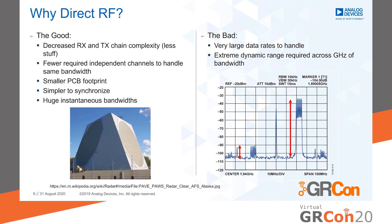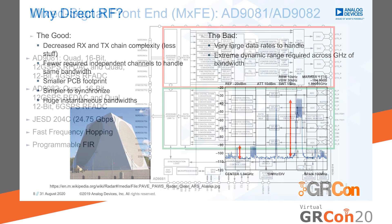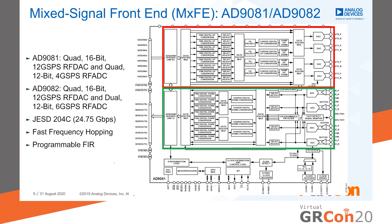To bring some context, let's look at an example device used in this space — something like the AD9081 or AD9082, which I use on a daily basis. These are highly integrated chips. On a single chip, we have quad DACs and quad ADCs with very high bandwidths — on the order of 4 or 6 gigasamples per second on the ADC side and 12 gigasamples per second on the DAC side. These chips have lots of DSP inside them. On the TX or DAC side we have fine and coarse digital upconverters, and on the ADC side we have the reverse — what we call channelizers — which we'll get into later.